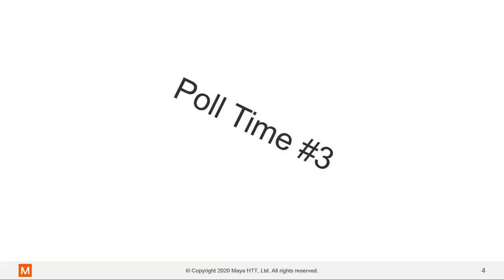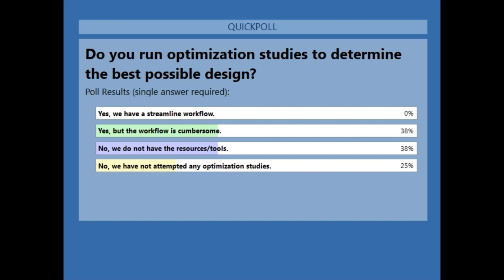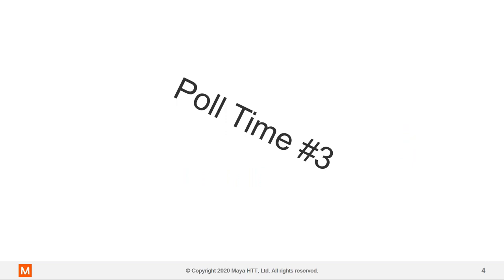Looking at the poll results: no one is fully satisfied that their optimization workflow is streamlined. A couple of attendees have something in place but find it cumbersome — that may be an area to explore to streamline and support better. For those without resources or tools, we're looking at ways to make optimization less resource-intensive. And for those who haven't attempted optimization studies, as the industry shifts in that direction it may be something to consider. We appreciate everyone sharing their insight.